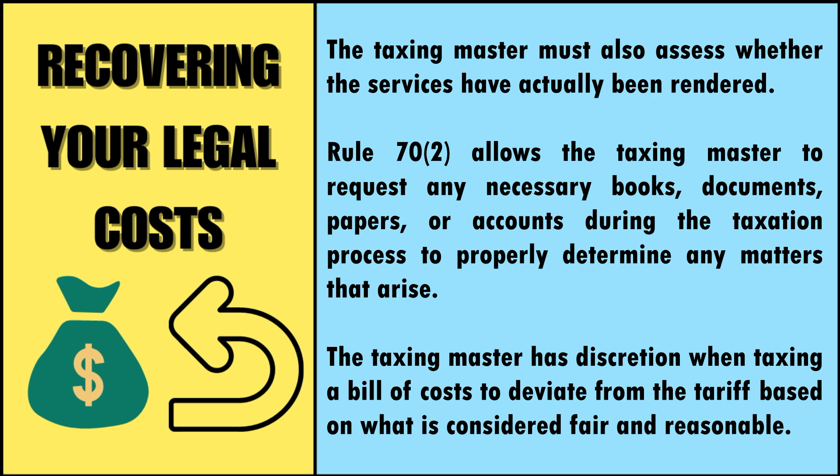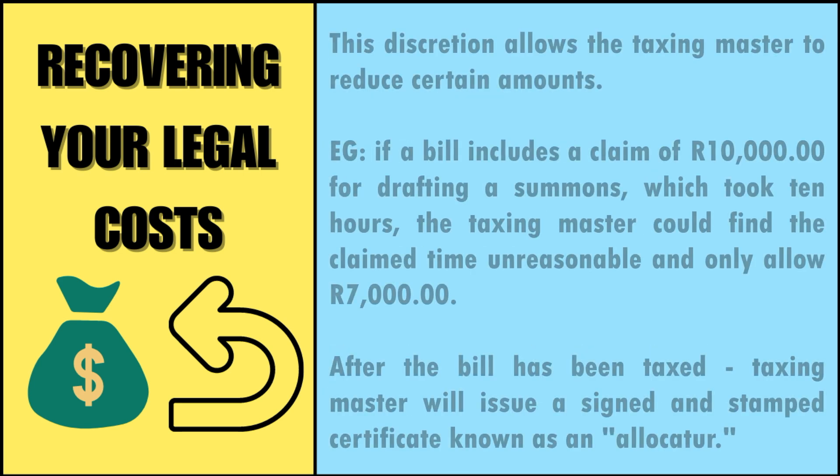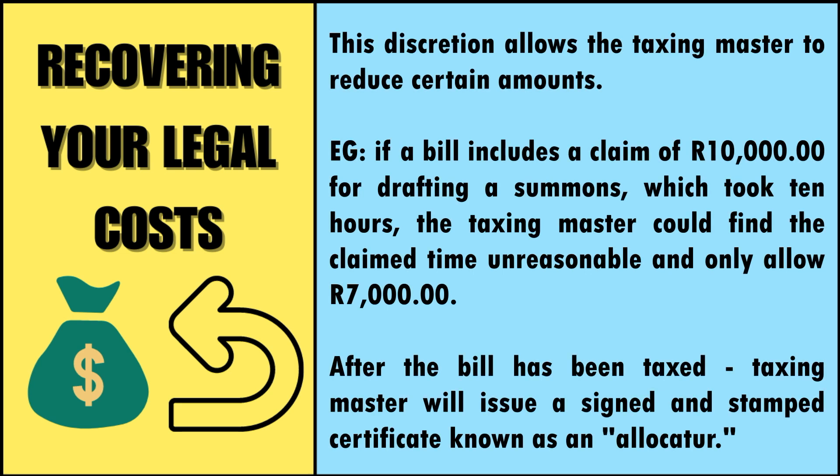Rule 70 subsection 2 allows the taxing master to request any necessary books, documents, papers or accounts during the taxation process to properly determine any matters that arise. The taxing master has discretion when taxing a bill of costs to deviate from the tariff based on what is considered fair and reasonable. This discretion allows the taxing master to reduce certain amounts. For example, if a bill includes a claim of R10,000 for drafting a summons, which allegedly took 10 hours, the taxing master could find the claimed time unreasonable and only allow R7,000.